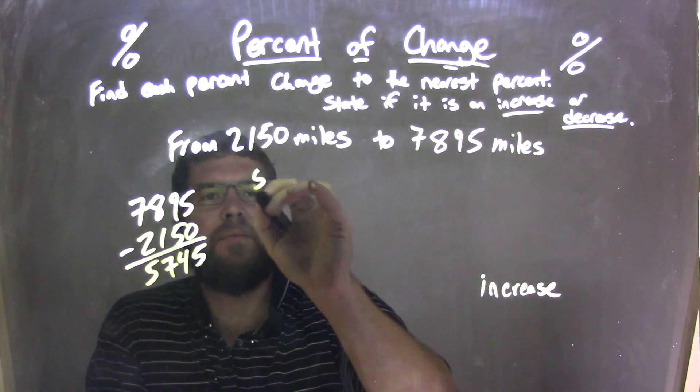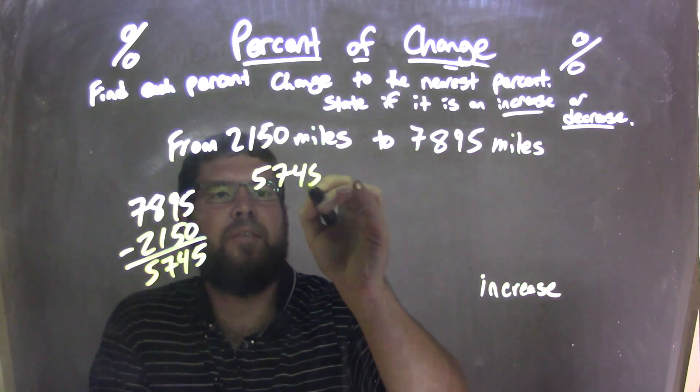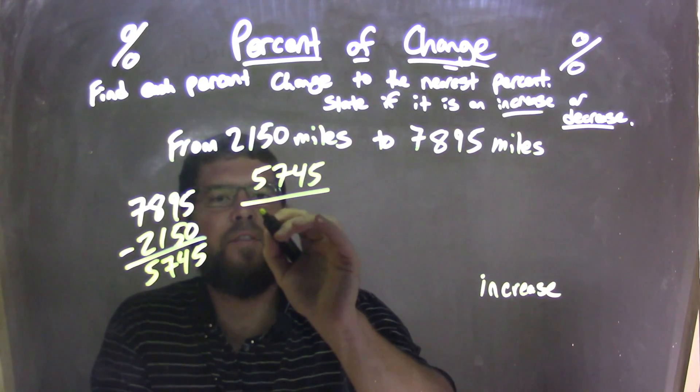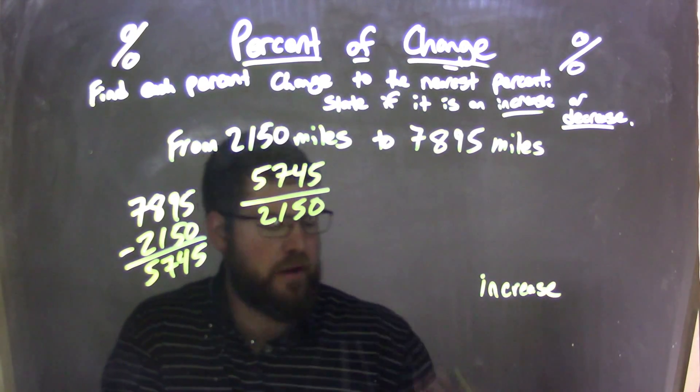I take that number, 5,745, and divide it by our first number, 2,150.